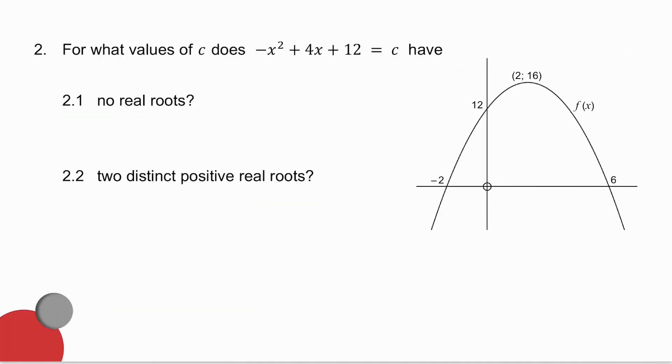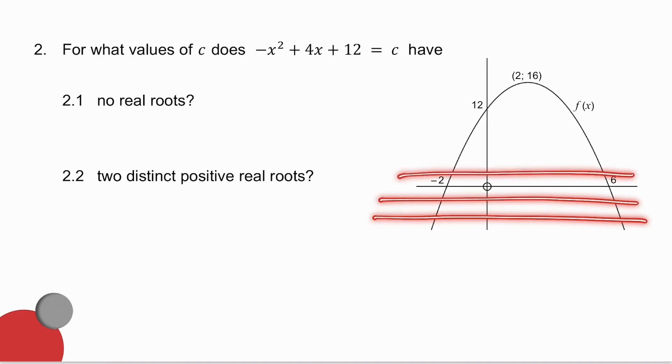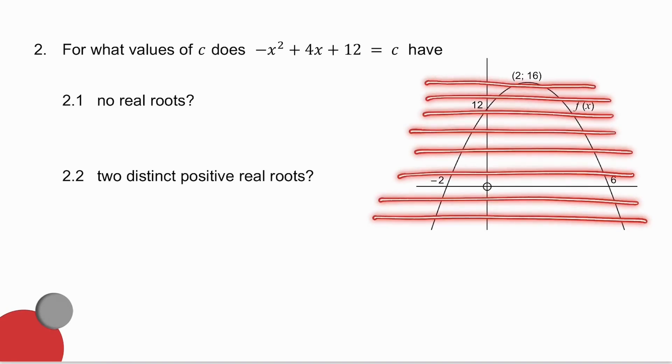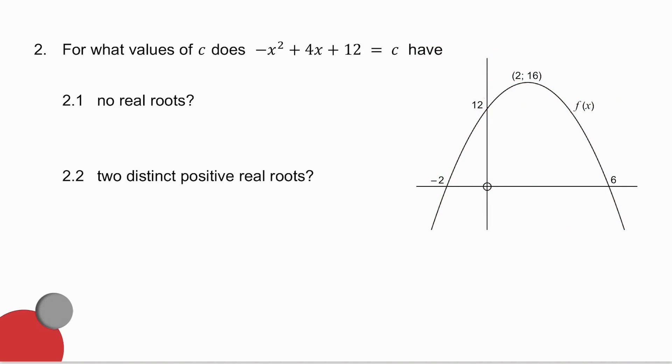In the second example, what I'm asking you is for what values of c does -x² + 4x + 12 equals c have no real roots. Now, the graph of y equals c is a horizontal line. The horizontal line is cutting the parabola twice. I keep going. There comes a time when it cuts the parabola once, and then it doesn't cut the parabola at all. Now, when I ask you when it has no real roots, where is it? Well, that means it's not going to cut the parabola at all. So where does a horizontal line never cut the parabola?